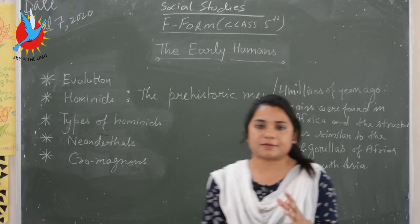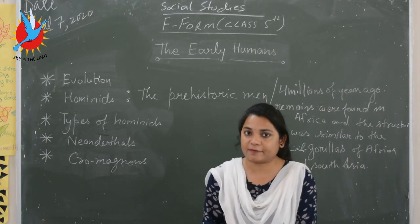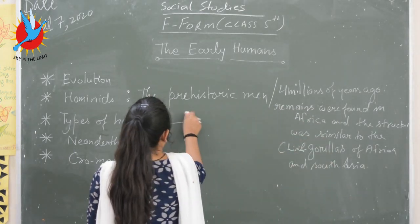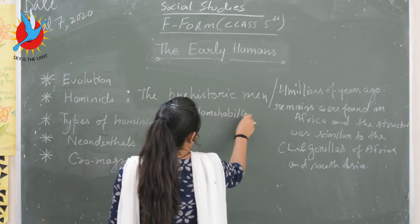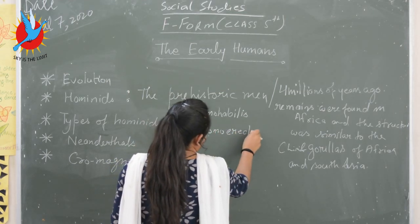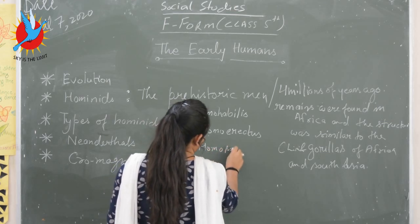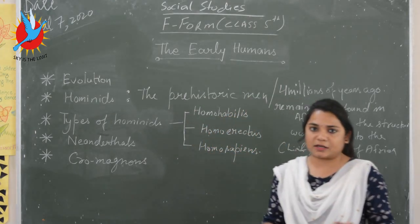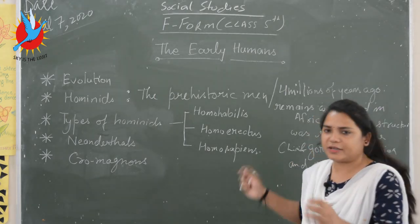There are three types of hominids identified till now. Number one is Homo Habilis, number two is Homo Erectus, and number three is Homo Sapiens. The descriptive discussion on these three is not important, so we are going to study about them in brief.